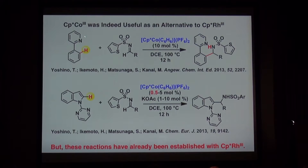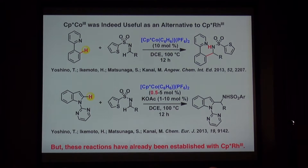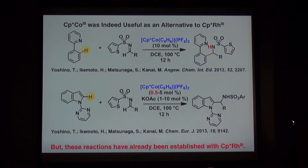We started the project. Dr. Yoshino found that CpStar-cobalt(III) was indeed useful as an alternative to CpStar-rhodium(III), and the reaction of 2-phenylpyridine with imine proceeds nicely; we reported this in 2013. We further expanded the utility of these catalysts to C2-selective CH functionalizations of indoles with imines — the reaction proceeds at the C2 position, so it's different from 3D lacrosse-type reactions. Strictly speaking, these initial two reports are simply the replacement of precious rhodium metal with cobalt, so from a scientific point of view it's not good enough.